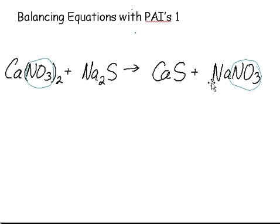To get two NO3s on the right side, we put a big 2 right there. That gives us two NO3s on the right and two NO3s on the left.